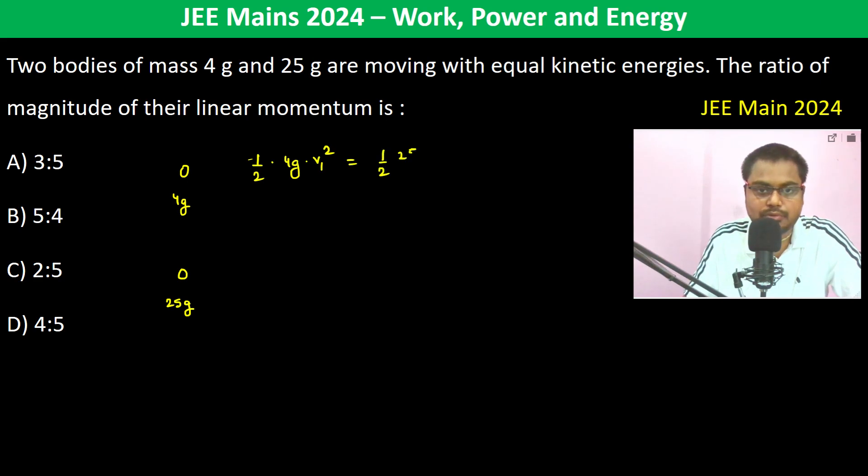half into 25 gram into V2 square. The ratio of the magnitude of their linear momentum is, okay so therefore this is gone, G is gone, so therefore V1 by V2 is equal to how